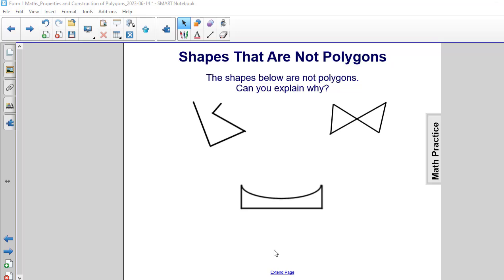The shapes below are not polygons. Can you explain why? Well here are the reasons. In the first shape this one is an open shape. Notice that the top is not closed.